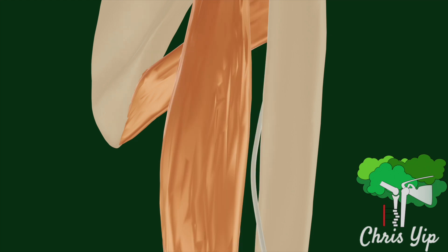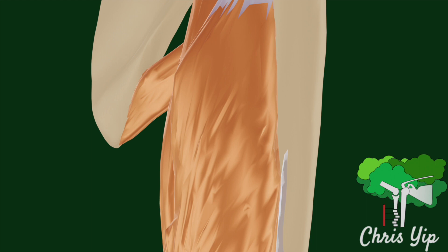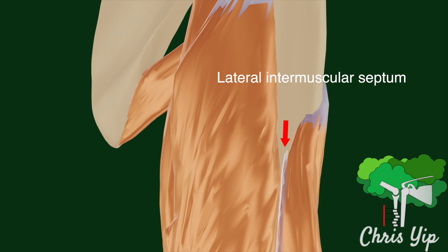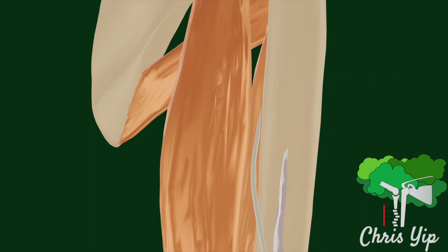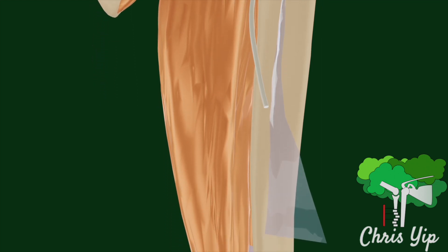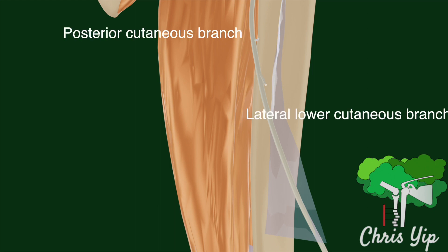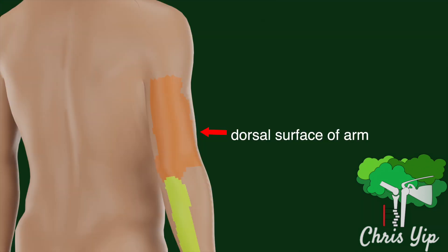A quick reminder that the nerve at this point is in the posterior compartment of the arm, which is separated from the anterior compartment, where the biceps are, by the lateral intermuscular septum. On reaching the lateral side of the humerus, the nerve pierces the lateral intermuscular septum into the anterior compartment. The posterior and the lower lateral cutaneous branches branch off in the posterior compartment to innervate the dorsal surface of the arm.